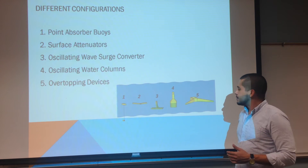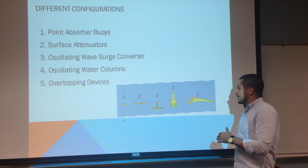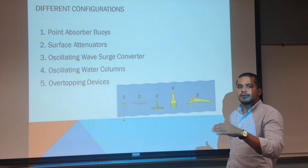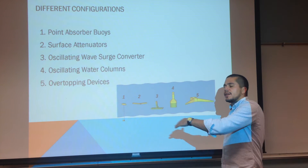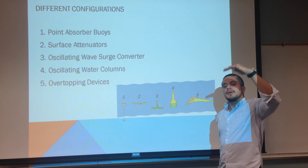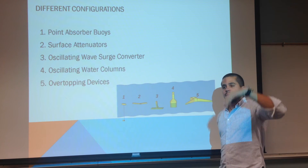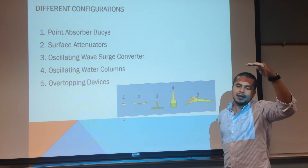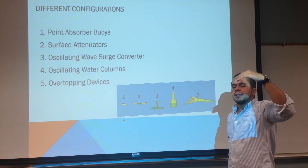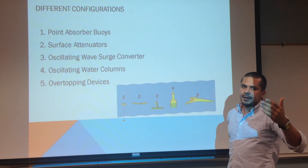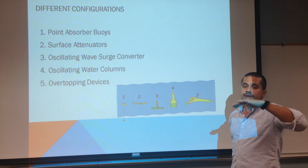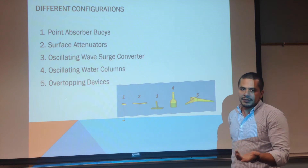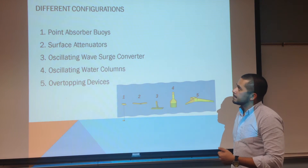Overtopping devices take advantage of the velocity of the wave to get water to a higher potential level, and taking advantage of that higher potential level, they transform this potential energy into electrical energy.